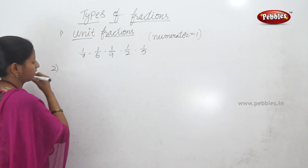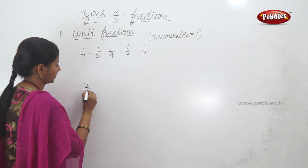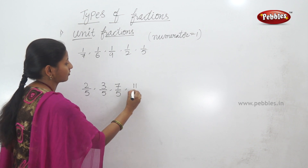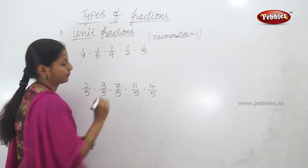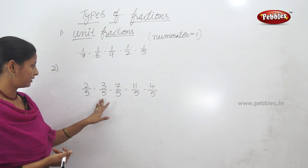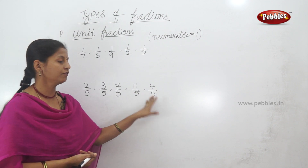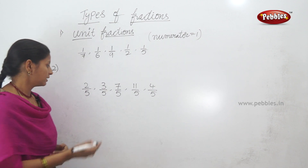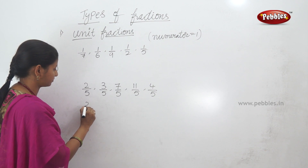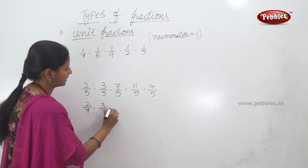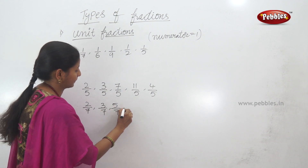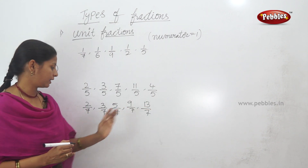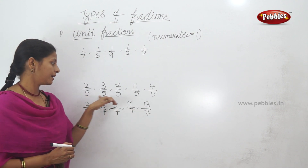Next, I will tell you about another type of fraction: 2 by 5, 3 by 5, 7 by 5, 11 by 5, 4 by 5. Look — the denominator is the same number. 5 is the same number in all of these. Also 2 by 7, 3 by 7 — the denominator is the same number.